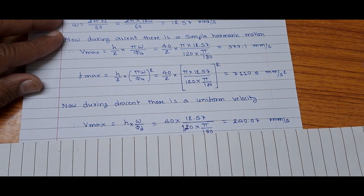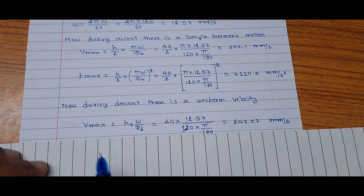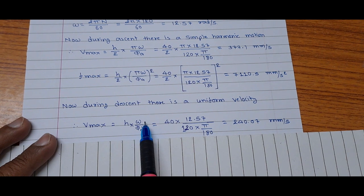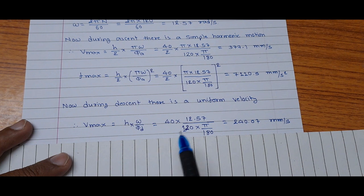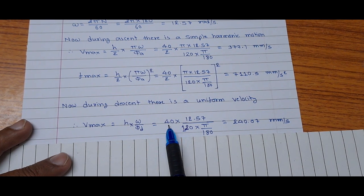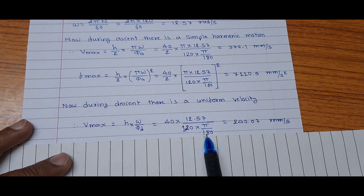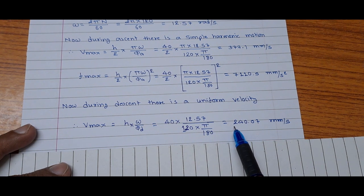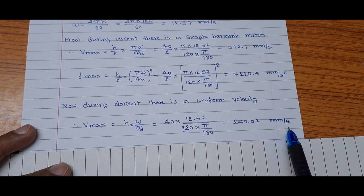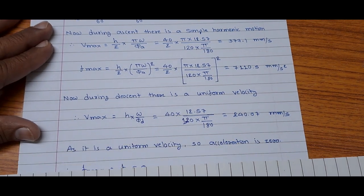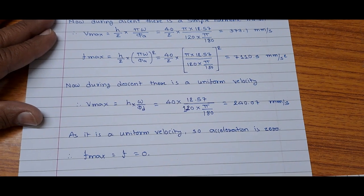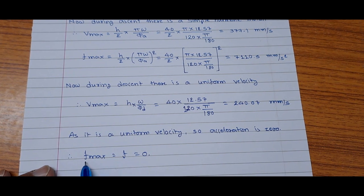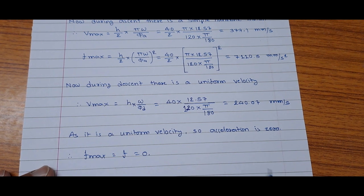During descent there is uniform velocity. The maximum velocity is given by V_max = h × ω / φ_d, where φ_d is in radians. Substituting: 40 × 12.57 divided by (120 × π/180), which gives 240.07 millimeters per second. Since the motion is uniform velocity, there is no acceleration — the maximum acceleration f_max equals zero.